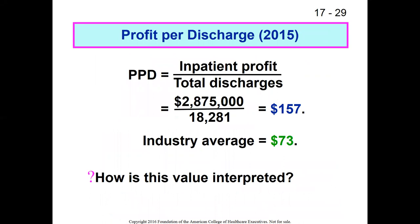Our first example is profit per discharge. We take the profit allocable to the inpatient side of operations and divide it by total discharges to get a profit per discharge. This tells us how effective we are at generating income on our inpatient operation. Our nominal organization earned $157 per discharge, which is actually pretty good if the industry average is $73. So bigger is better in this case.